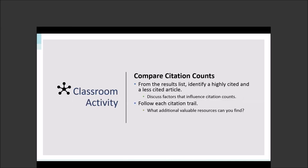I have two more classroom activities to share. The first is to compare citation counts for different articles. You can have groups look at a list of results, identify a highly cited article and an article with fewer citations, and follow the citation trail to see where it leads. You can discuss why one article may have more citations — is it the topic? Are there trends in the discipline around citation? Is it the age of the article or the journal of publication? You can get students thinking about why citation counts can be so very different when looking at a results list.